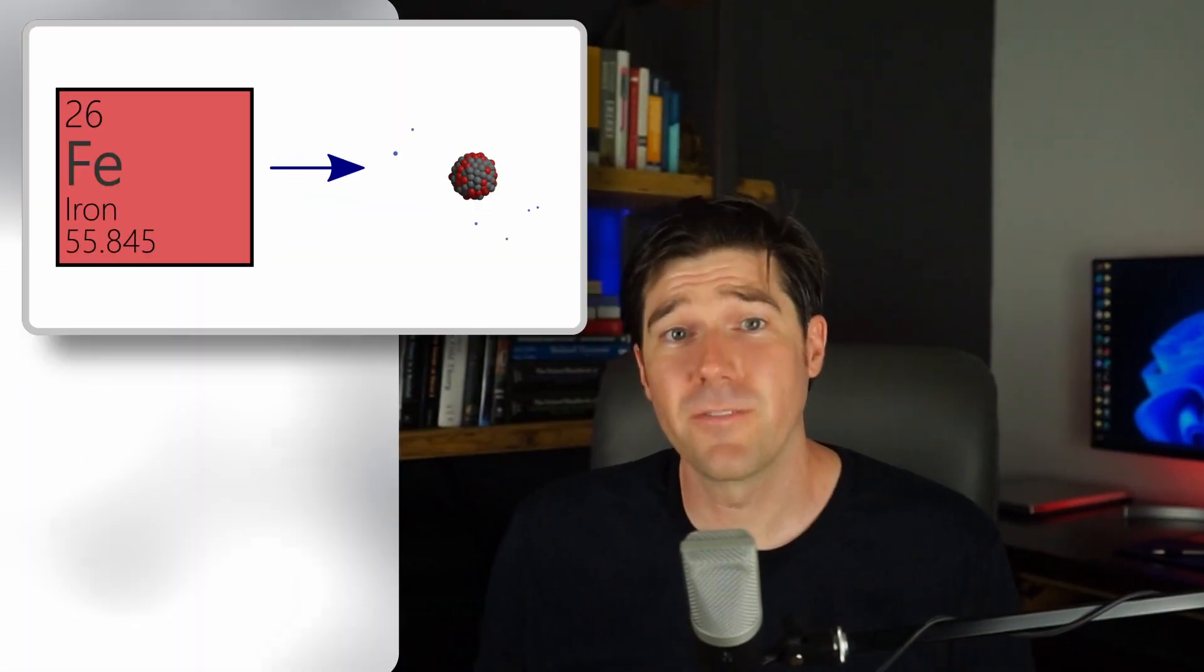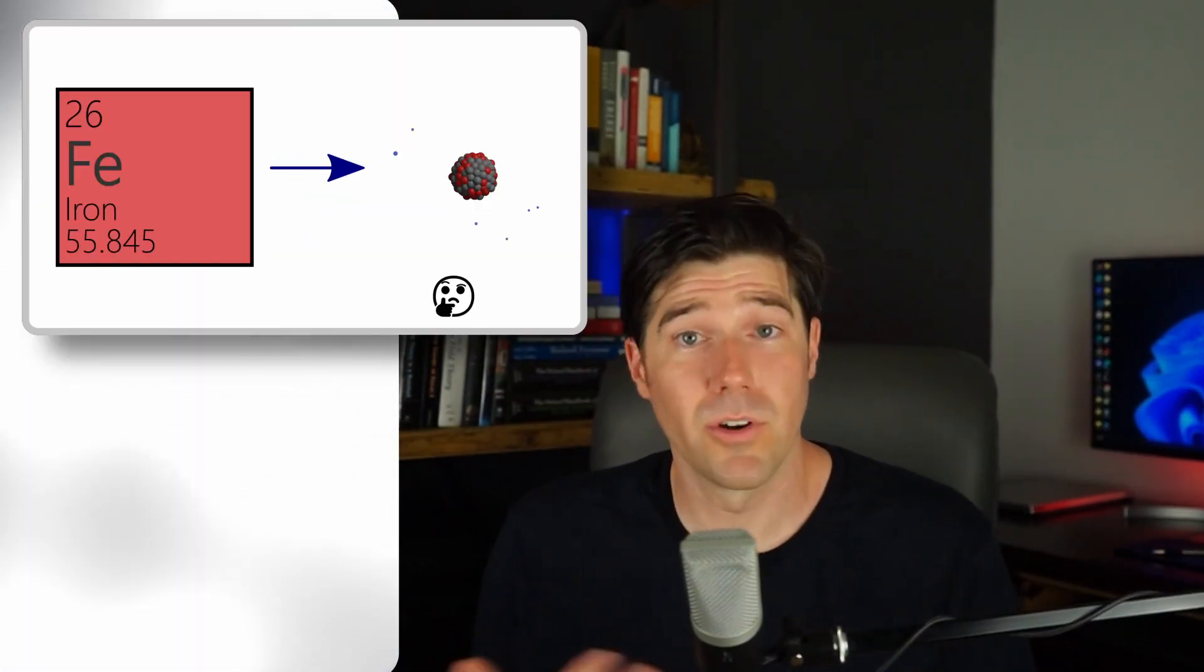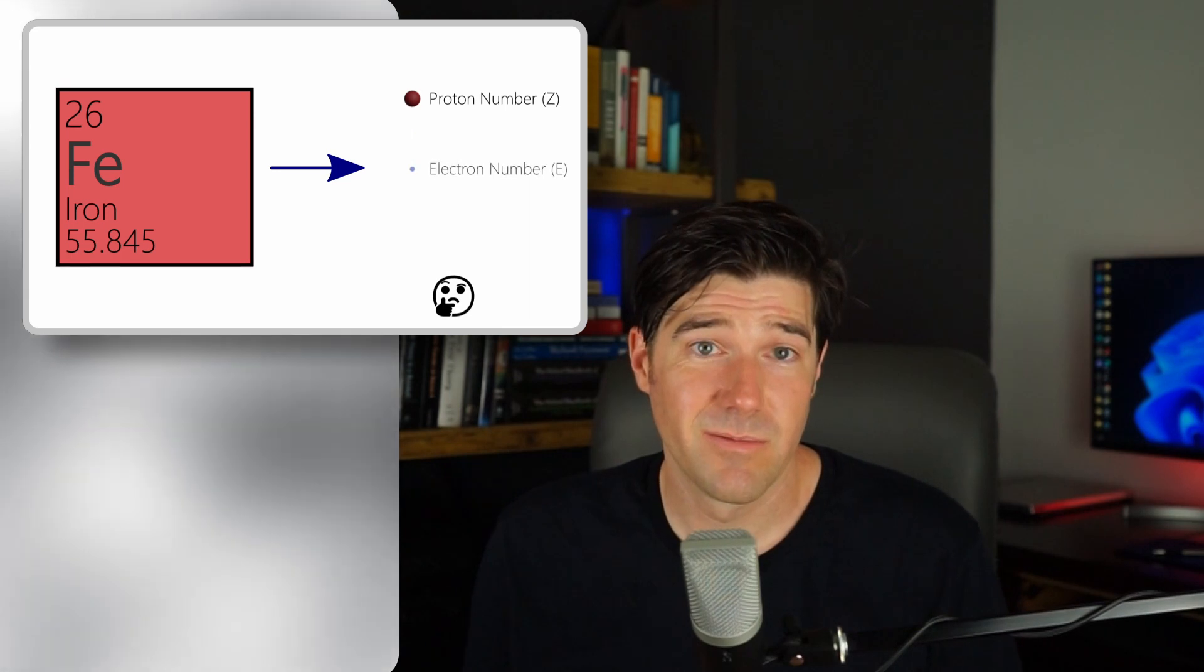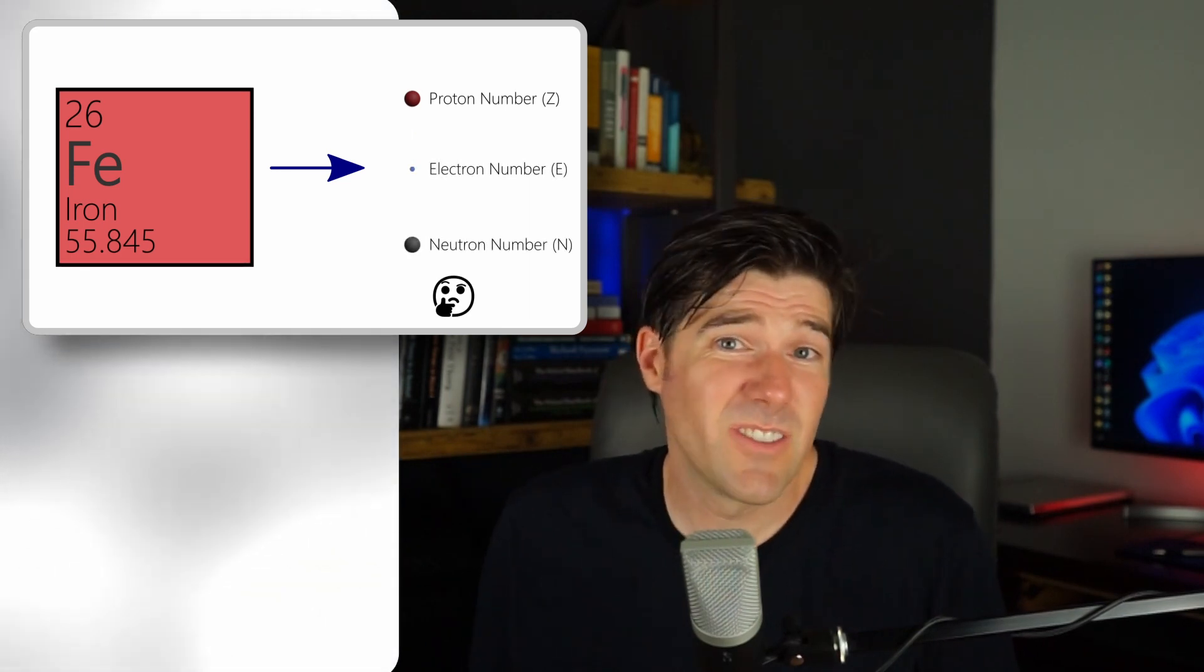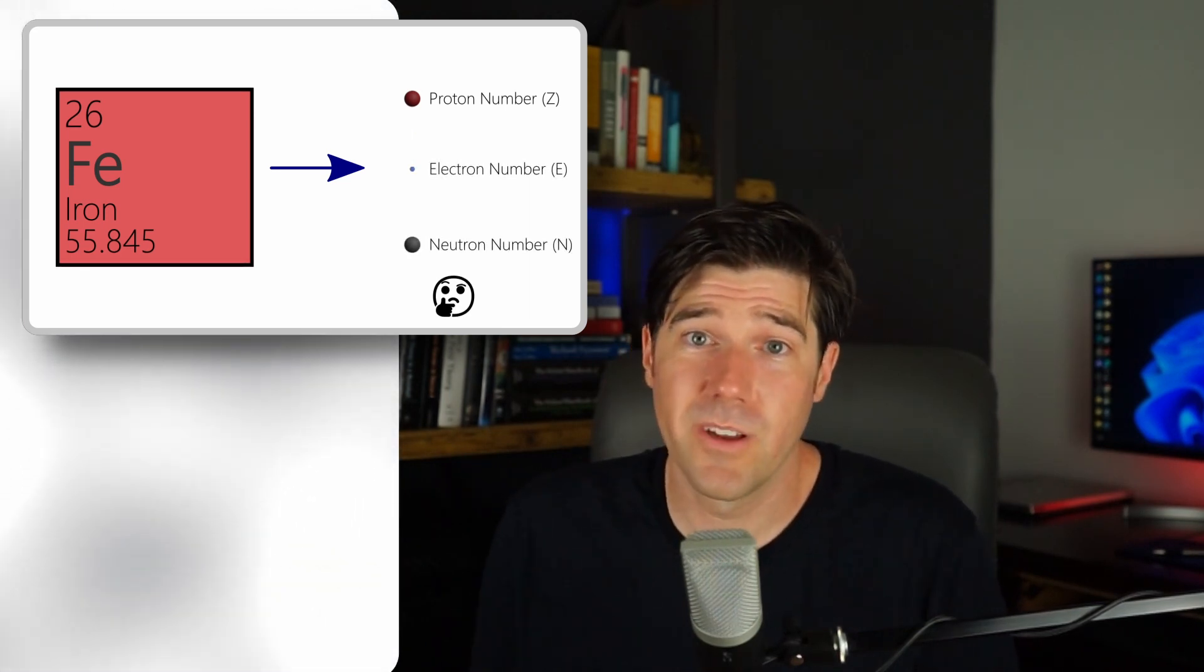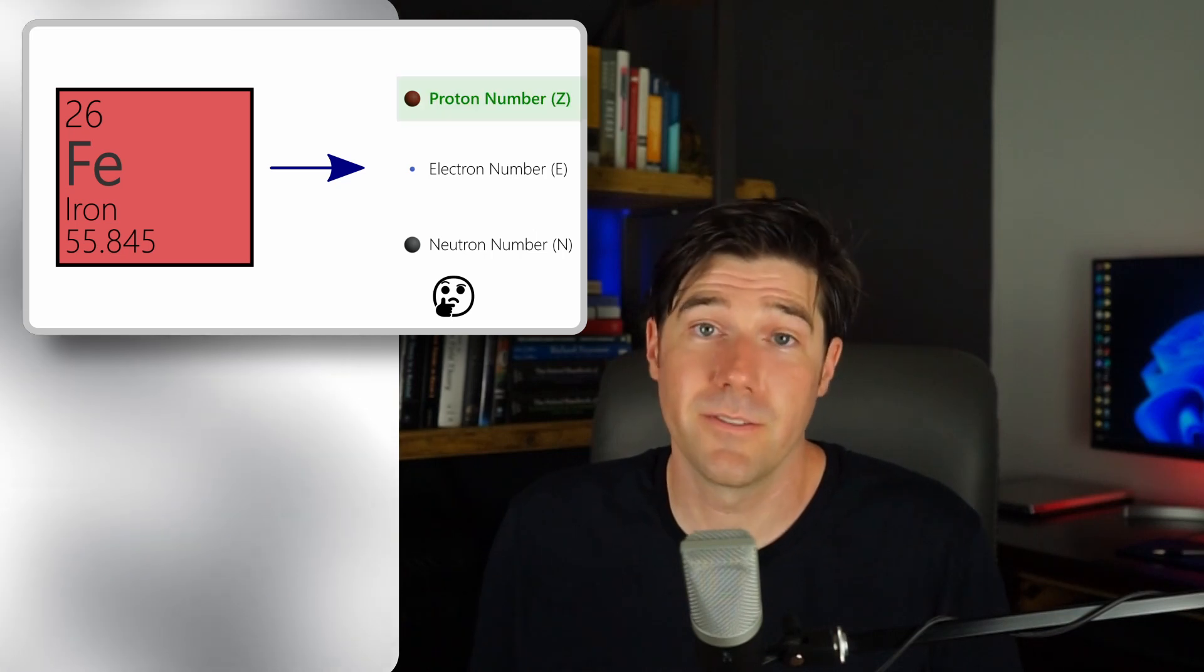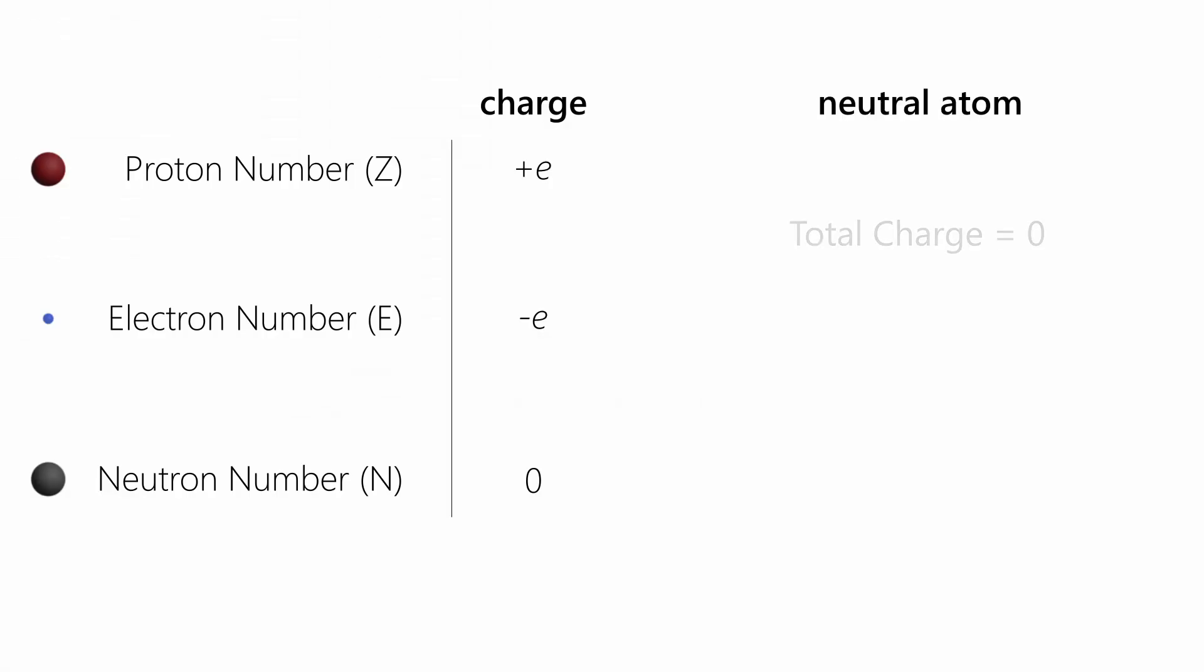So back to our original question. What's the defining feature for an element? Is it the number of protons, electrons, or neutrons? Each can vary, but the short answer is the number of protons define an element. Here's why. For neutral atoms, the number of protons and electrons within an atom must be equal, since the negative and positive charges must cancel out. So the more protons, the more electrons a neutral atom will acquire.